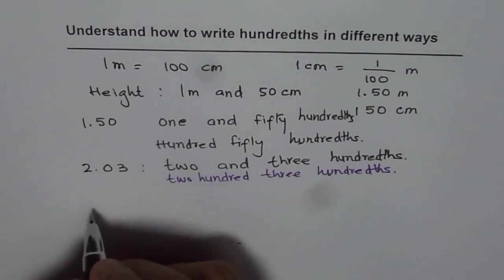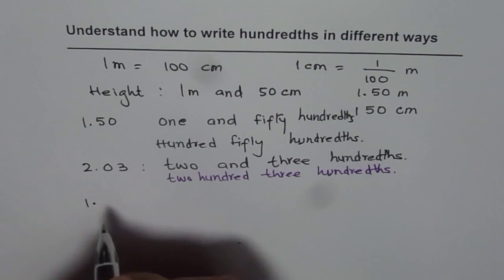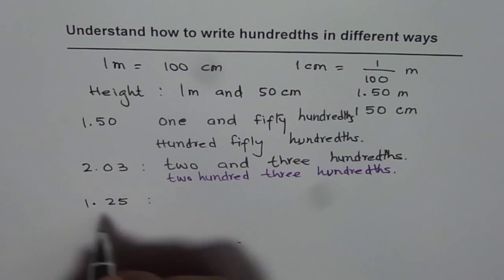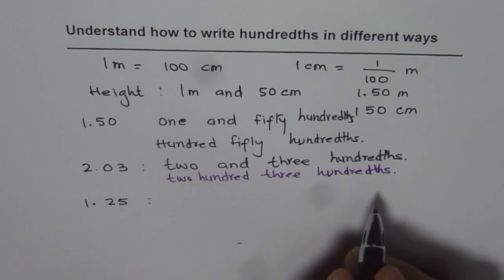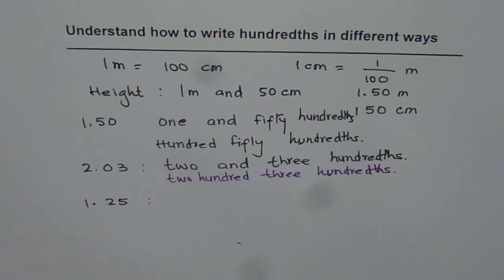So try to write a number like one point two five. That should be one and twenty-five hundredths. Or you could write this as one hundred twenty-five hundredths. That is how you can write a number given in hundredths in different ways.